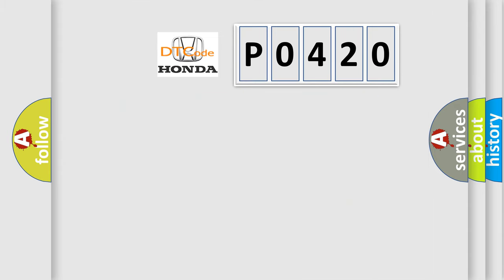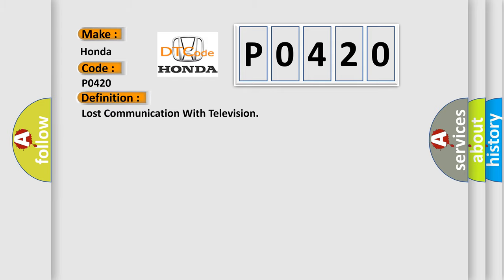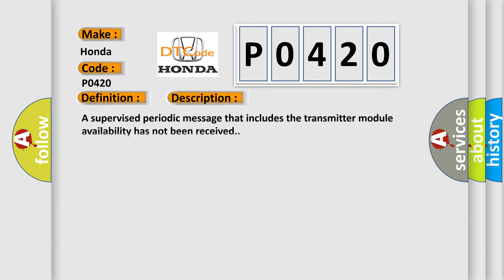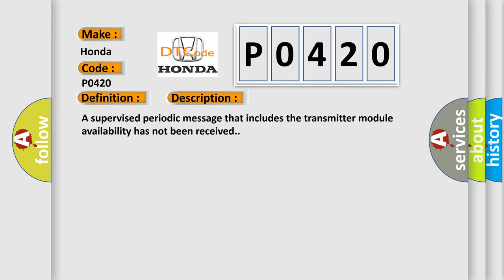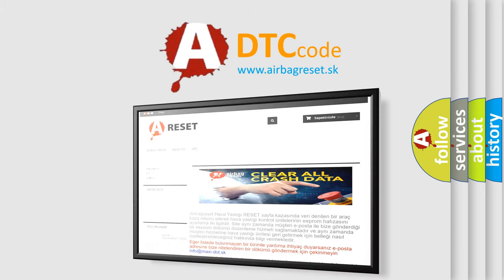So, what does the diagnostic trouble code P0420 interpret specifically for Honda car manufacturers? The basic definition is: Lost communication with television. This is a short description of this DTC code: a supervised periodic message that includes the transmitter module availability has not been received. The Airbag Reset website aims to provide information in 52 languages. Thank you for your attention.